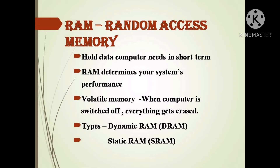When the computer is switched off, or if there is a power interruption, everything stored in RAM gets erased. When we start the computer, the operating system files are written into RAM. RAM is of two types: DRAM (Dynamic RAM) and SRAM (Static RAM).